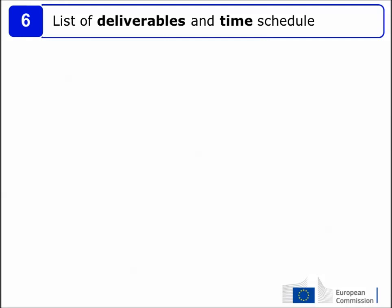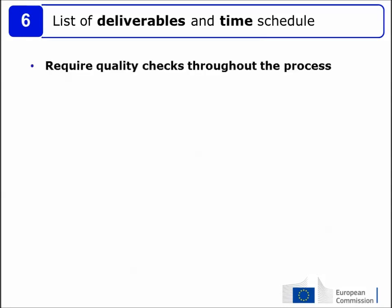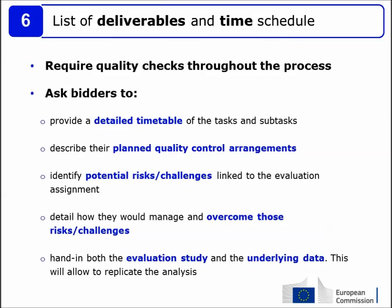In the final section of the terms of reference, the list of deliverables should be provided with the corresponding timeline for the study. More precisely, require quality checks throughout the process and ask bidders to provide a detailed timetable of tasks and subtasks, describe their planned quality control arrangements, identify potential risks and challenges linked to the evaluation assignment, detail how they would manage and overcome those risks, and hand in both the evaluation study and the underlying data to allow replication of the analysis.